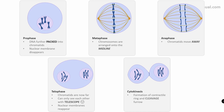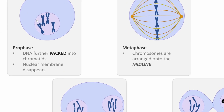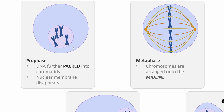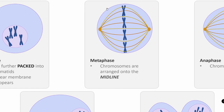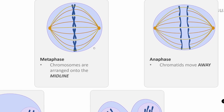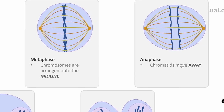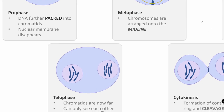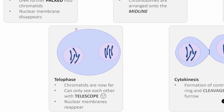Let's review: In prophase, DNA is packed into chromatids. In metaphase, chromosomes are arranged on the midline. In anaphase, they move away from each other. In telophase, they are now far apart — looking at their sisters with special telescopes.